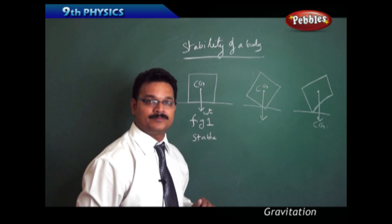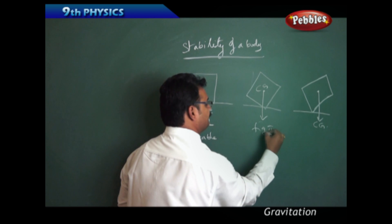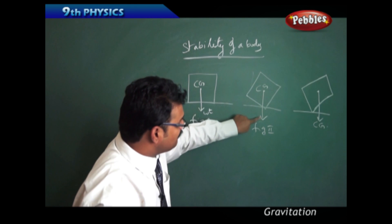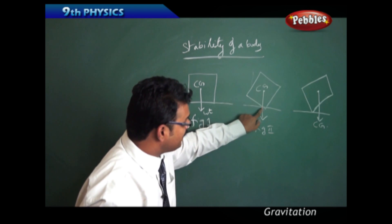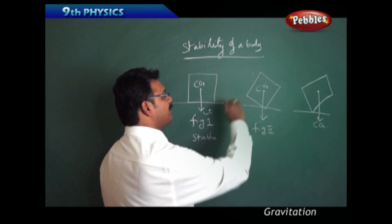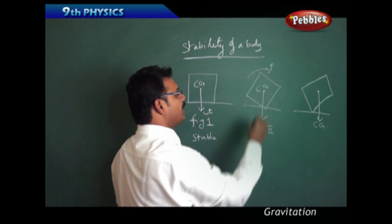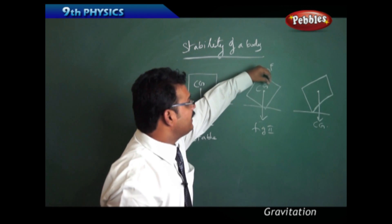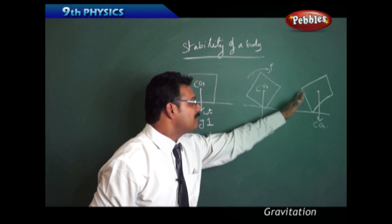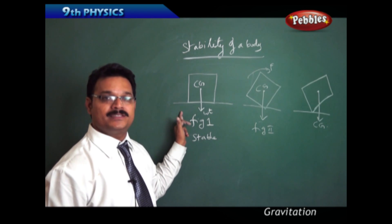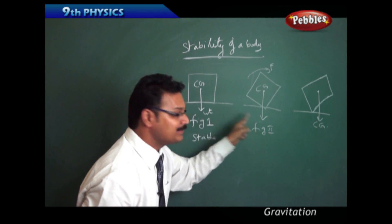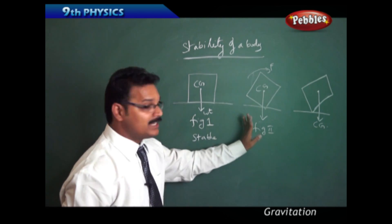See Figure 2. Here, the centre of gravity line is passing through the base of the box — this means it is in a toppling condition. If I apply some force, make the body turn, and then release the force, the box comes back to the initial stable stage, because the centre of gravity line is still passing through the base of the box.